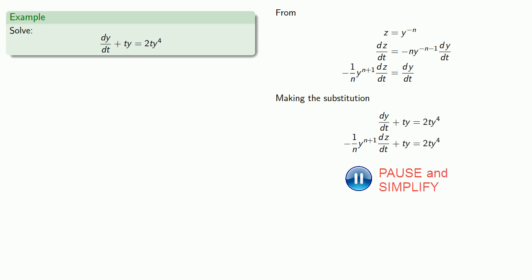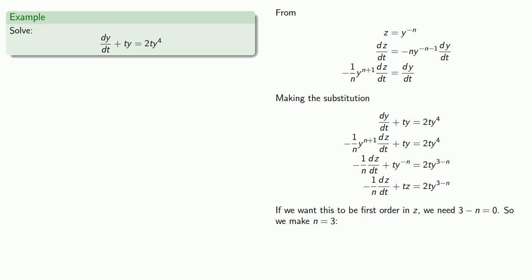And we'll make our substitutions and simplify. Now if we want this to be first order in z, we have to get rid of this y variable. And so that means we need 3 minus n, the exponent, to be equal to 0. And so we make n equal to 3, and this gives us the equation.